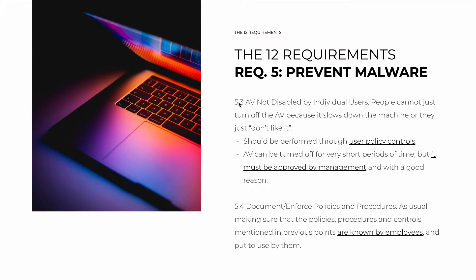Sub-requirement 5.3 is about the antivirus program not being disabled by individual users. People cannot just turn off the antivirus because it slows down the machine or because they don't like it. Even worse, for example, if someone is trying to watch a pirated movie on their work computer and turns off the antivirus because it's interfering with a torrent program — that's unacceptable. No turning off the antivirus. This should be an ironclad rule enforced formally through user policy controls. Machine users don't have permissions to turn off the antivirus due to their role, period.